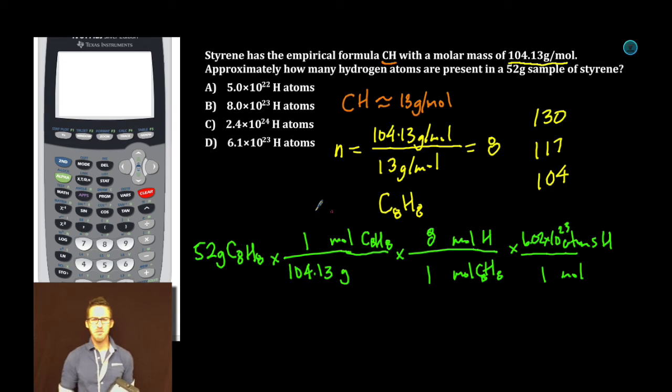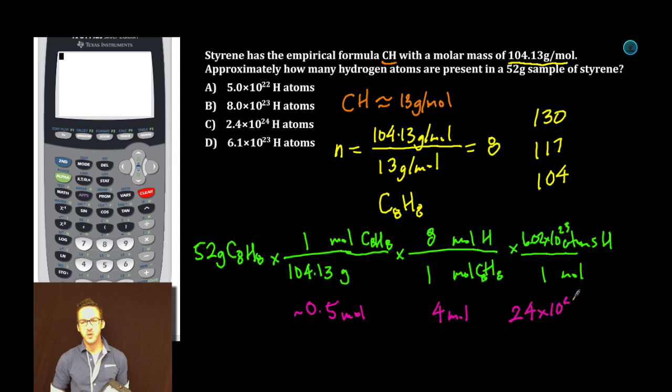All right, let's do this mental math. 52 times 1, 52. 52 divided by 104—that's about 0.5 moles of C8H8. 0.5 times 8, 4 moles of hydrogen. And then 4 times Avogadro's number. Let's just do 4 times 6, that's 24 times 10 to the 23.